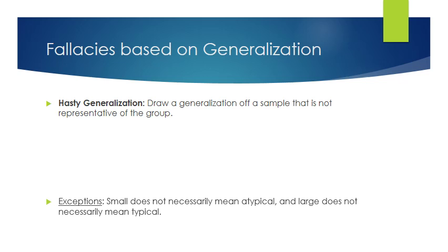Large samples aren't necessarily always safe either, because they can be biased if not randomly selected. For example, if you take a sample of a thousand registered Republicans and ask who they want to win the election, of course they'll probably pick their person. So when we do statistical studies, even a sample of 150 people isn't necessarily good or bad — it's all about how the sample was acquired.